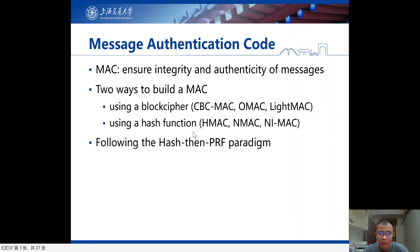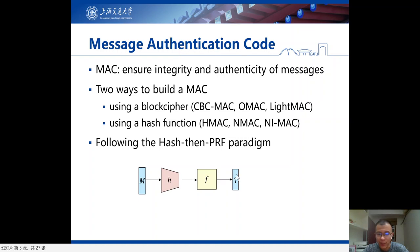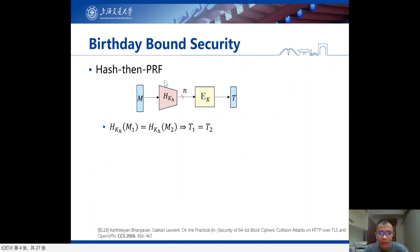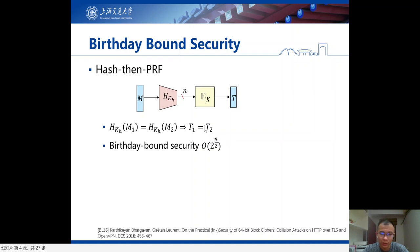Most of these MACs follow the hash-then-PRF paradigm. That is, a message will be first hashed by a universal hash function to produce a fixed-length string that is typically n-bit. And this n-bit string will be processed by a fixed-length PRF to produce the final tag. One drawback is that when the internal output of the hash function collides, then the output tags will also collide, and this collision usually results in a forgery attack. The complexity to find this collision is the birthday bound, that is 2 to the power half-n, also called birthday bound security.